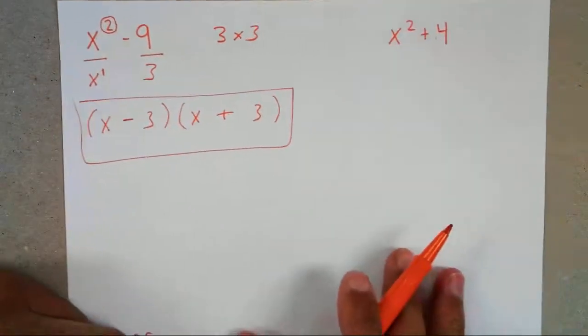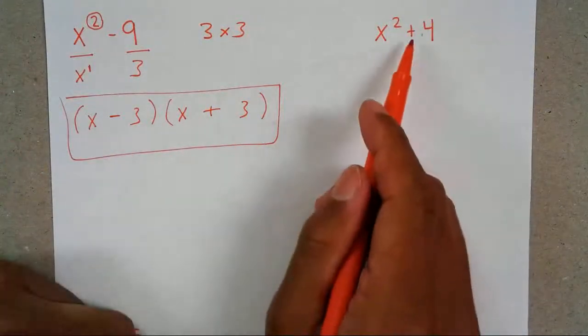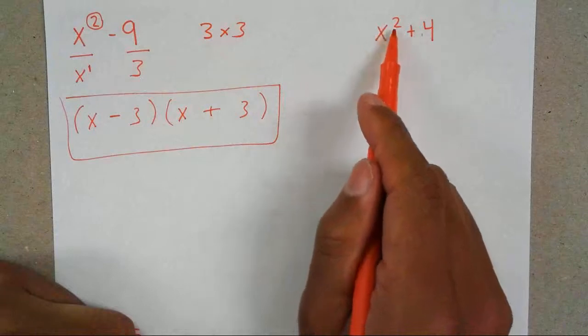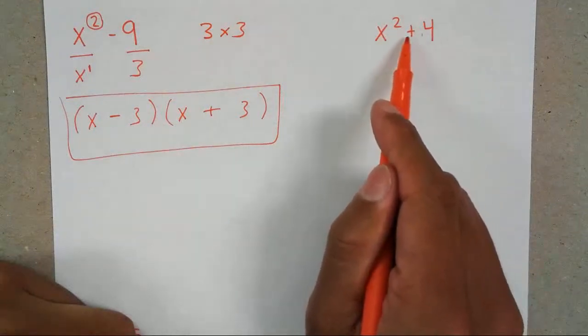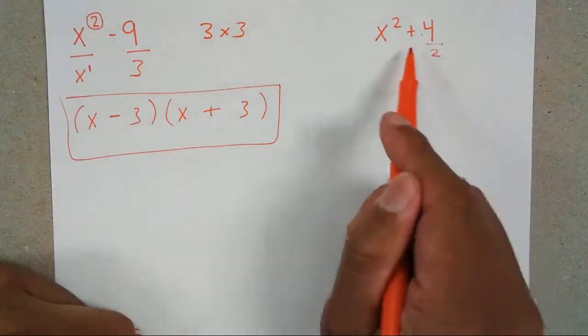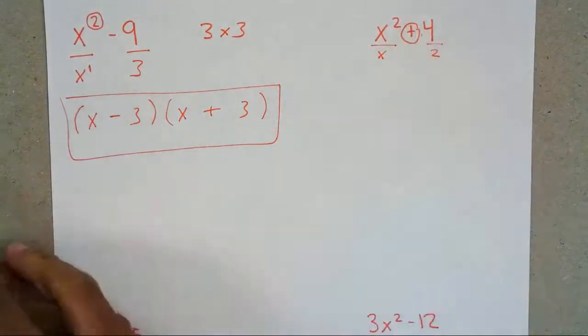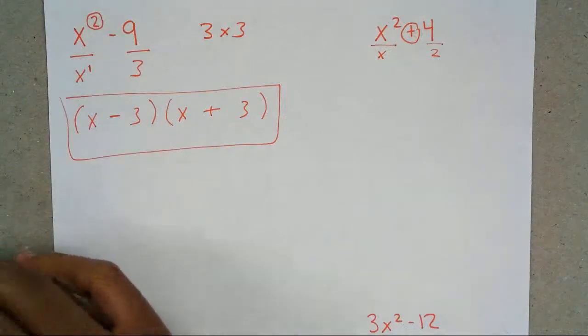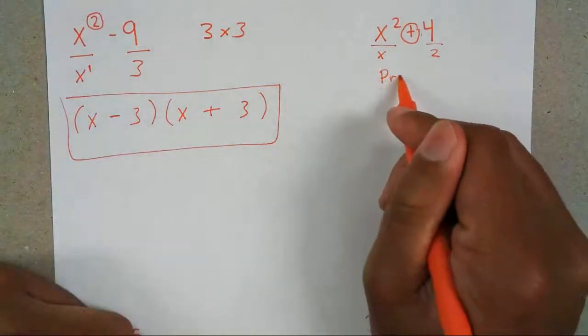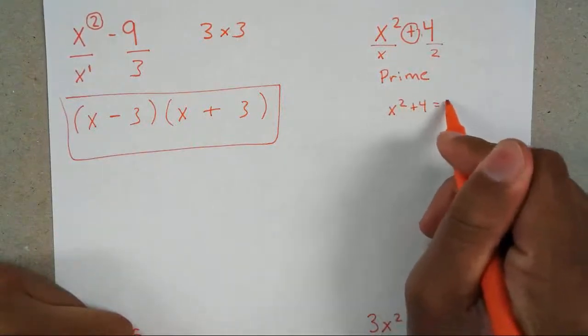But what about if you have x squared plus 4? Now remember how I said there's no such thing as a sum of squares? Do you see how this is a square and this is a square? The base of 4 is 2. The base of x squared is x. But why can't I factor out a sum of squares? Why is this answer prime?